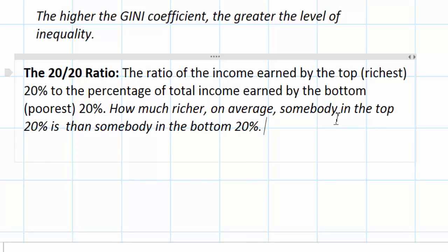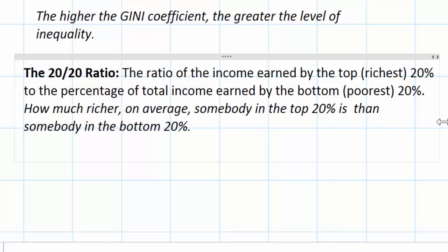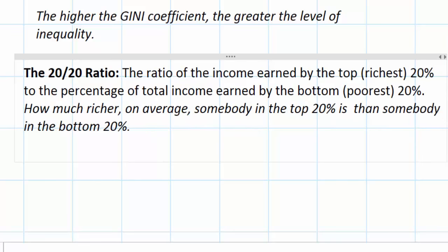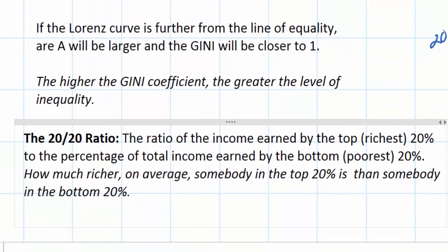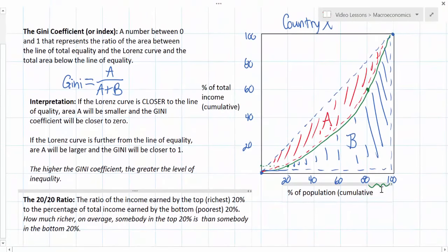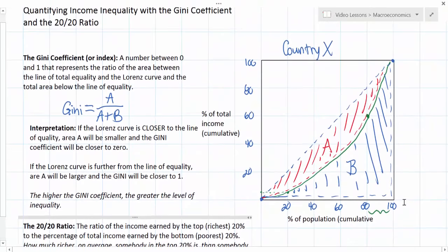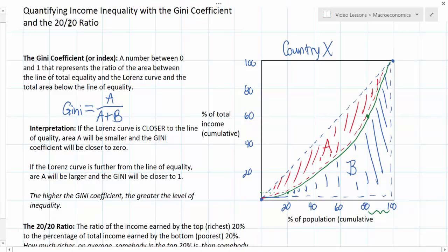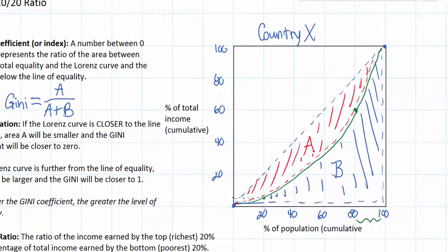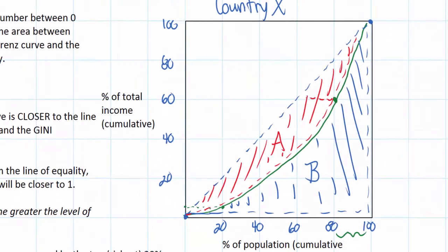That is a useful metric for comparing the level of income inequality in a country. Let's look back at our hypothetical country X — this calculation is really easy to demonstrate. Looking at our graph, we know that the richest 20% of income earners take home 40% of total income in country X.